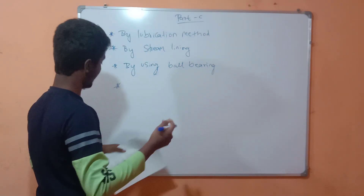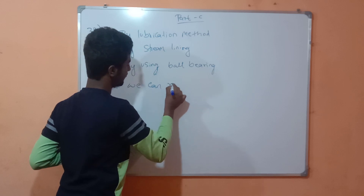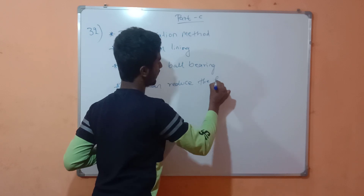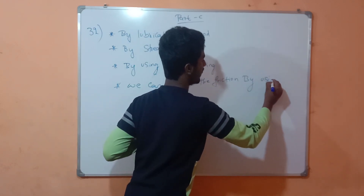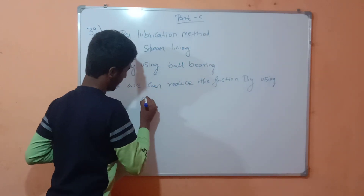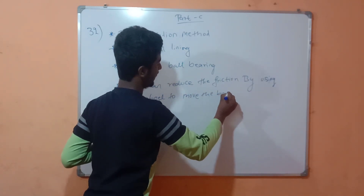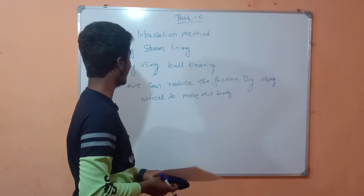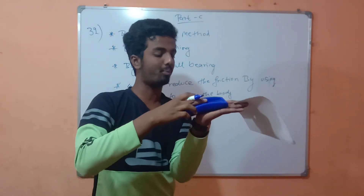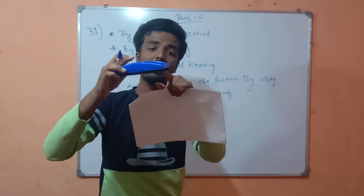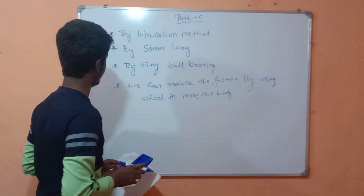We can also reduce friction by using wheels to move objects. For example, if we place a duster on a surface and push it, it is difficult. But if we attach four wheels to that duster, it becomes much easier — the friction is greatly reduced. That is what the fourth point illustrates.